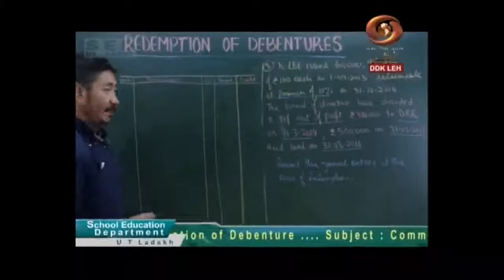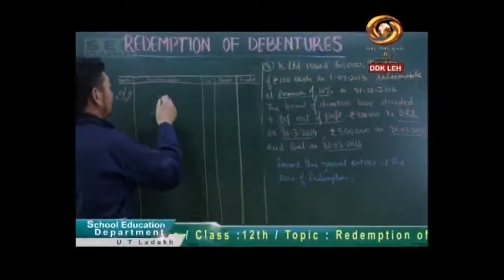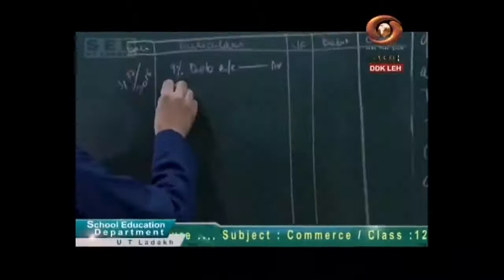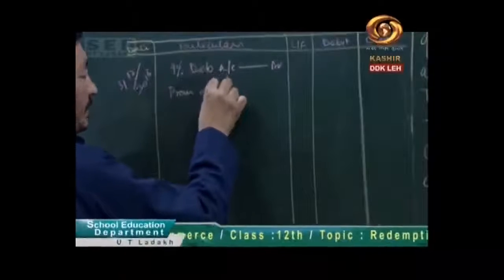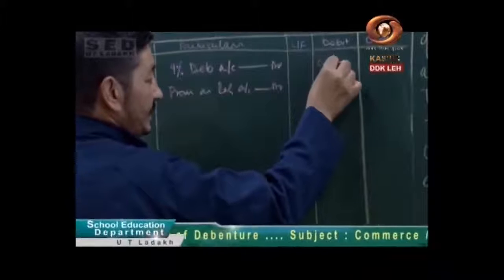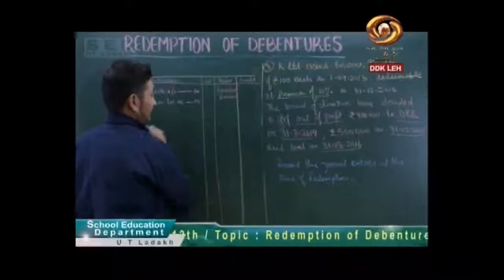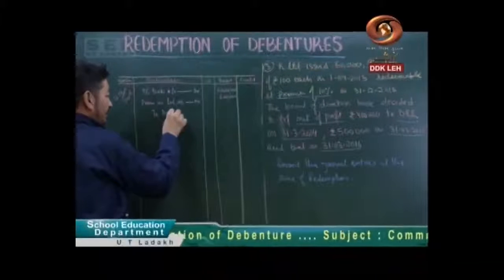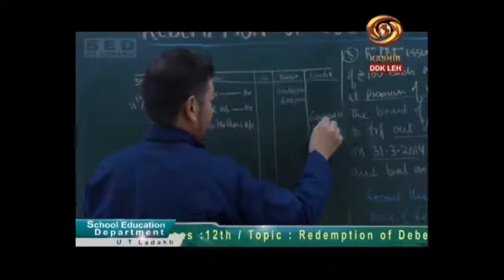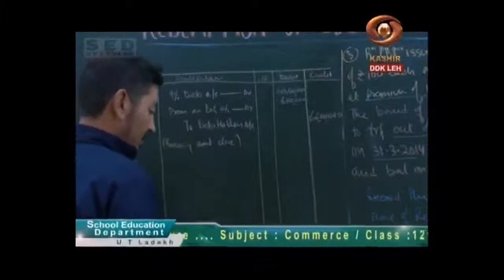So kids, we will have the entry at 31 December 2016. First of all, we will debit the 9% Debenture account — 60 lakh. Now 10% premium we had, that is 6 lakh. Total to Debenture Holders account: 66 lakh. Here the narration will be: being amount due when it is matured — debenture holders.